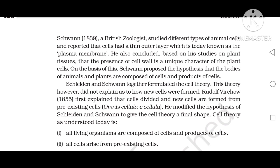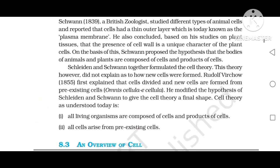Rudolf Virchow, 1855, first explained that cells divide and new cells are formed from pre-existing cells — omnis cellula e cellula. He modified the hypothesis of Schleiden and Schwann to give the cell theory its final shape. Cell theory as understood today states: first, all living organisms are composed of cells and products of cells; second, all cells arise from pre-existing cells.